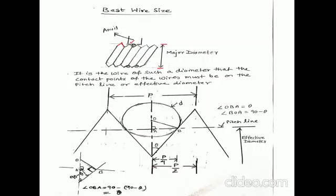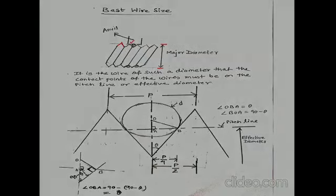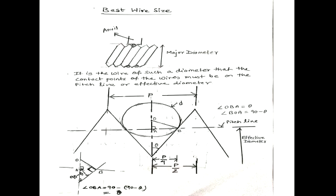As you can see in the given figure, B is the contact point. It is lying on the pitch line. This is the screw thread profile.